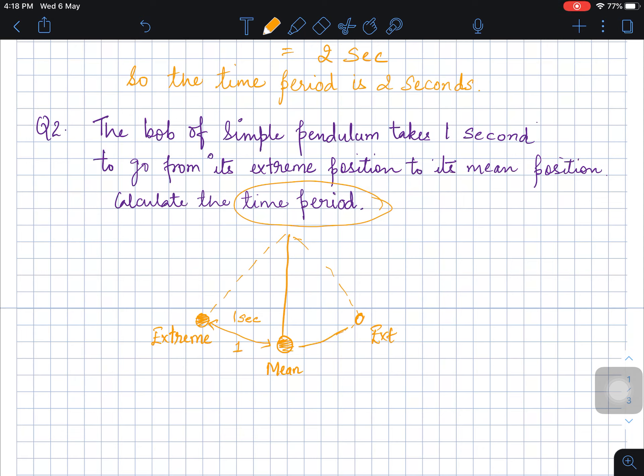This is 1, this is 2, again it will come 3, then it will again go back 4. Only then 1 oscillation will get complete.